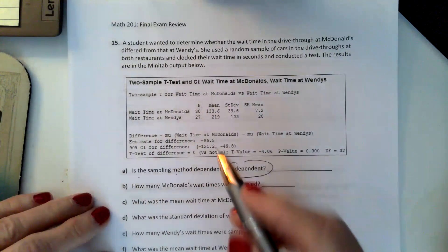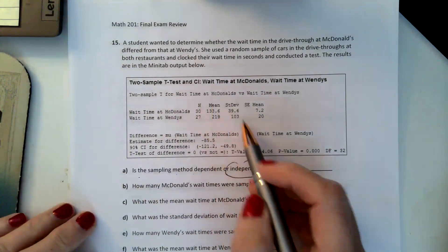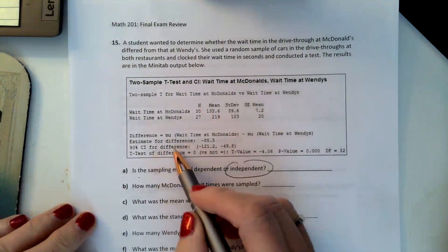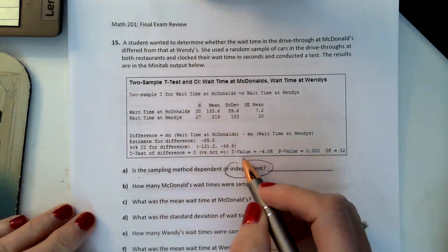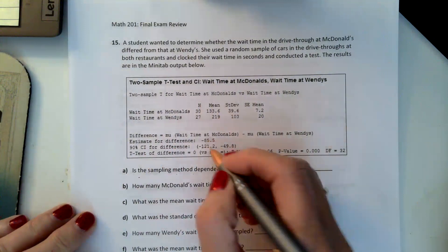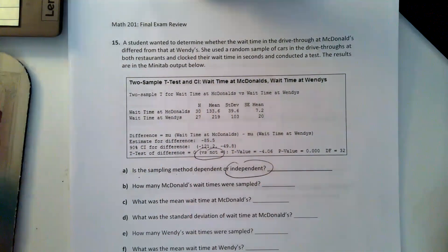You can see the sample size for each, the mean, the standard deviation. You can also see the confidence interval here. And for the t-test, they did a versus not equal, so that's going to tell us something.